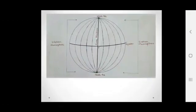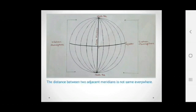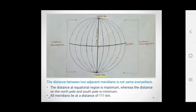Here, when we observe, we see that the distance between two adjacent meridians is not same everywhere, as the parallels with same distance. This is because all meridians meet each other at north pole and south pole. Here the distance between the meridians is maximum, whereas the distance on the north pole and south pole is minimum.